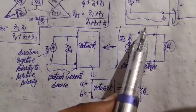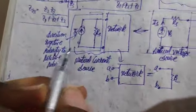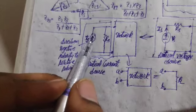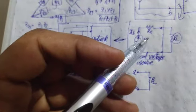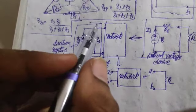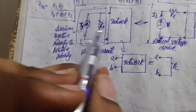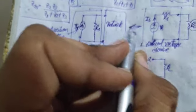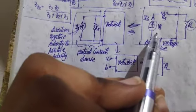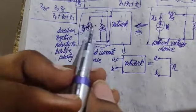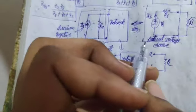So this is how we convert the practical voltage source to a current source. You can observe that the current flows from negative to positive polarity, and the series resistance becomes a shunt in the current source. You can go from current source to voltage source or voltage source to current source in either direction.